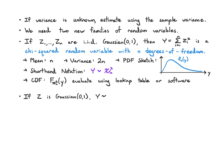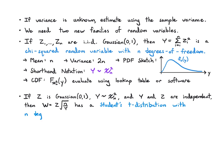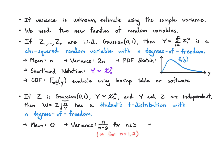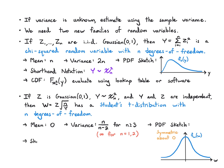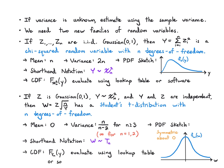The second distribution: if Z is Gaussian(0,1) and Y is chi-squared with n degrees of freedom and they are independent, then W equals Z times root n over Y has a Student's t-distribution with n degrees of freedom. The backstory behind why it's called Student's is interesting to look up. Its mean is 0, its variance is n over n minus 2 for n greater than or equal to 3 (and infinity for n equals 1 or 2). The PDF looks much like a Gaussian but with heavier tails and it's symmetric about 0. We write it as t sub n, and its CDF is evaluated using a lookup table or software.